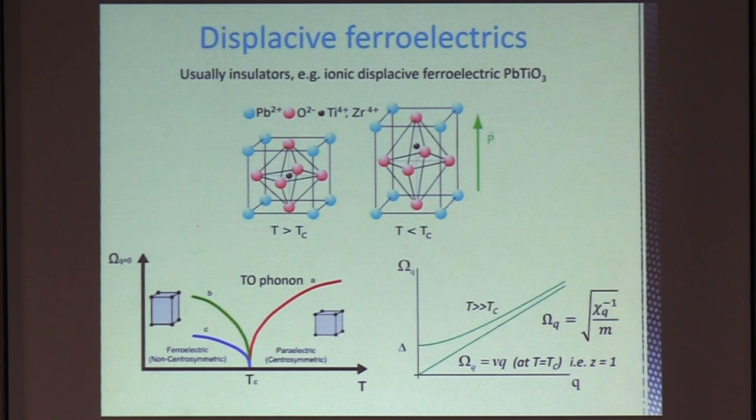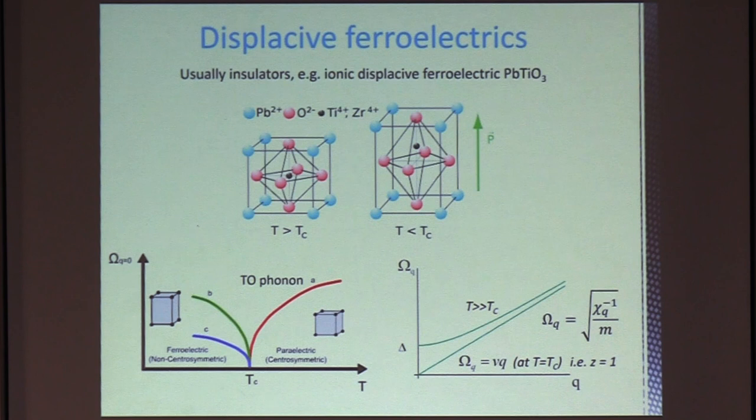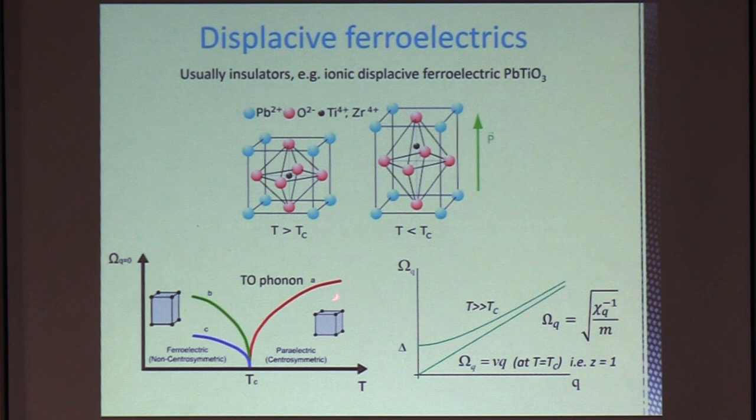So talking about ferroelectrics, I'm referring to displacive ferroelectrics, where you have an ionic displacement in the lattice. So it's a physical displacement, such as we have here in the example of lead titanate,